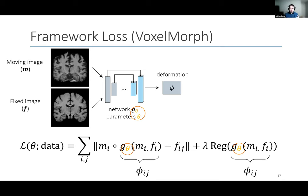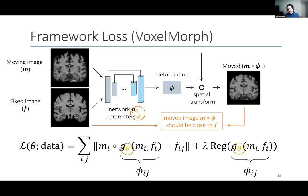This is an example of marrying neural network technology with classical backbones — taking the loss functions developed over decades and using them to teach our neural networks what a good registration is. The approach is called VoxelMorph. It's our research into this field and currently a popular package for registration. We implement everything including the loss in the neural network framework. The end result is we teach a neural network how to register data without ever needing ground truth — just by telling it what's good and what's bad.